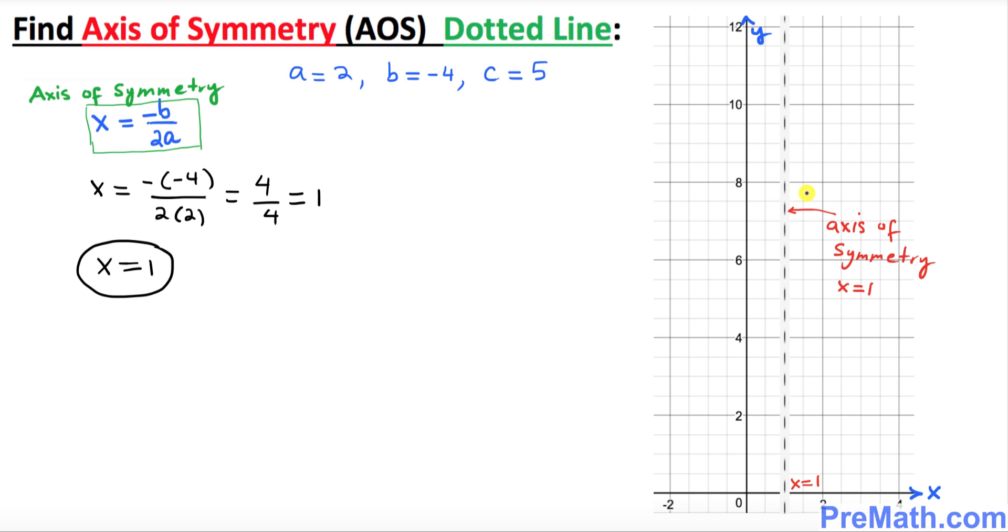Here is the graph of our axis of symmetry, which is a dotted line or broken line. It's a perpendicular line that passes through x at x equals 1.